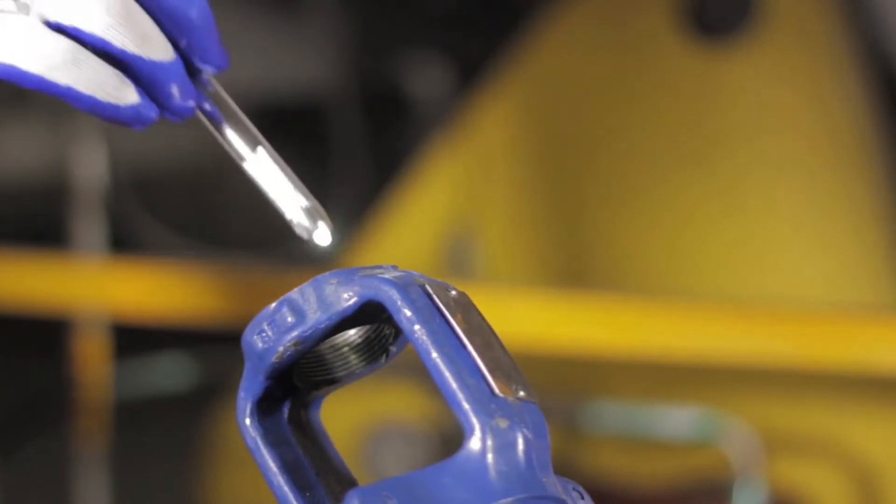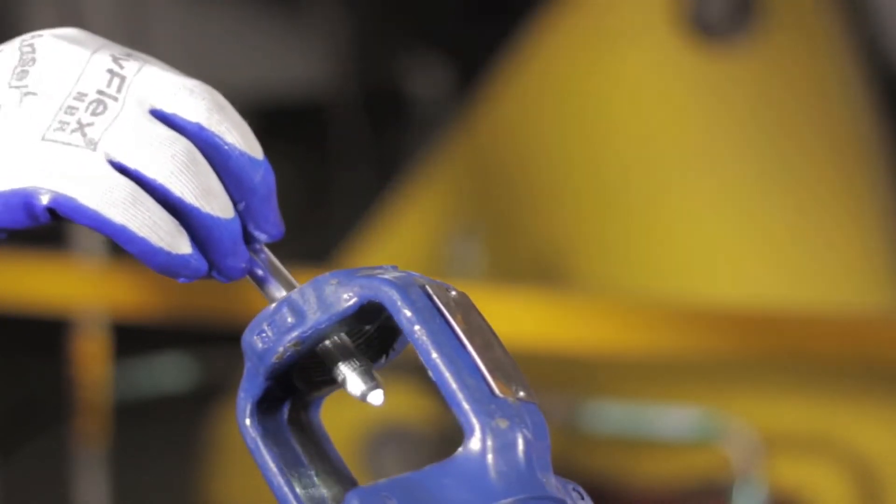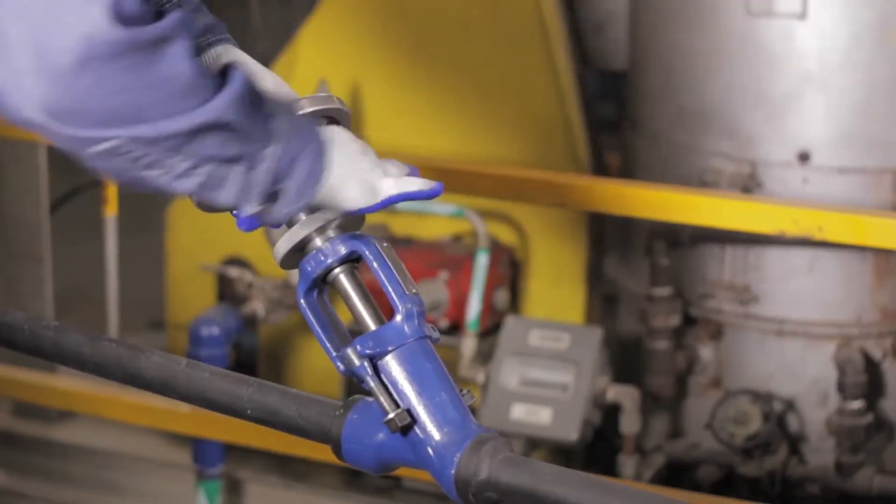You can do this fairly easily on small valves by using a flashlight. You should see a shiny surface completely free of blemishes. This indicates that the seat has been fully and evenly restored to its original factory condition.